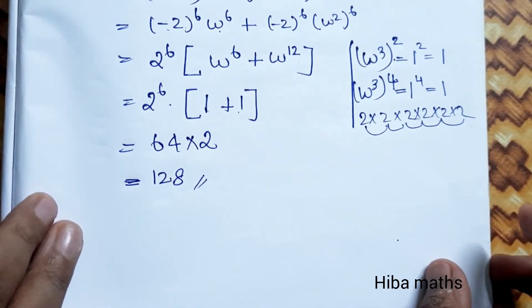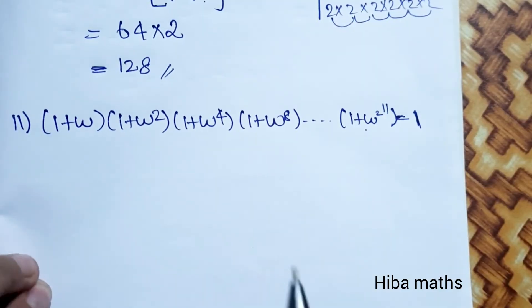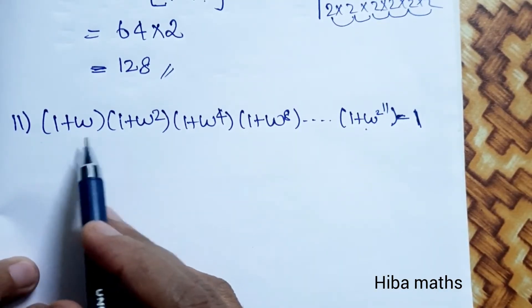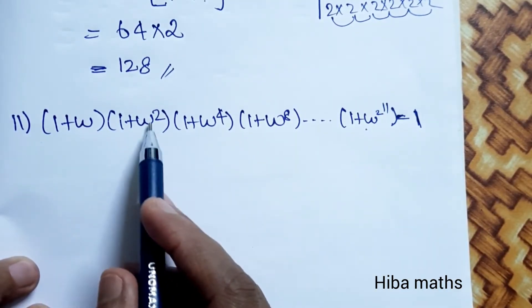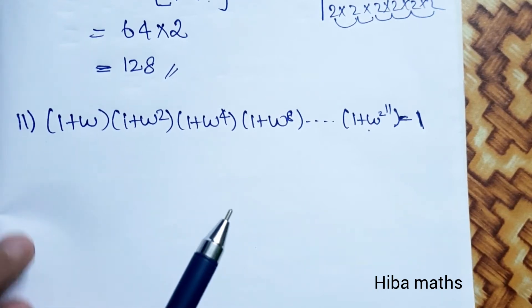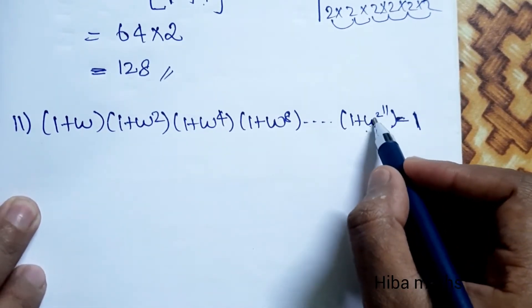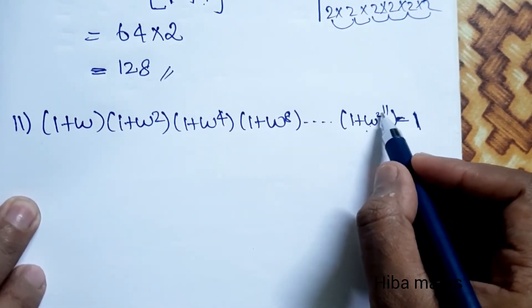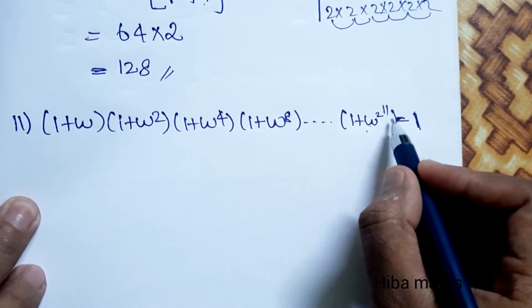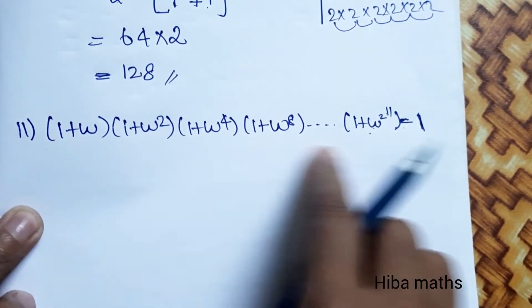Now the second subdivision: (1 + ω)(1 + ω²)(1 + ω^4)(1 + ω^8) up to (1 + ω^(2^11)), which equals 2^11 equal to 1. Let's see how to solve this.